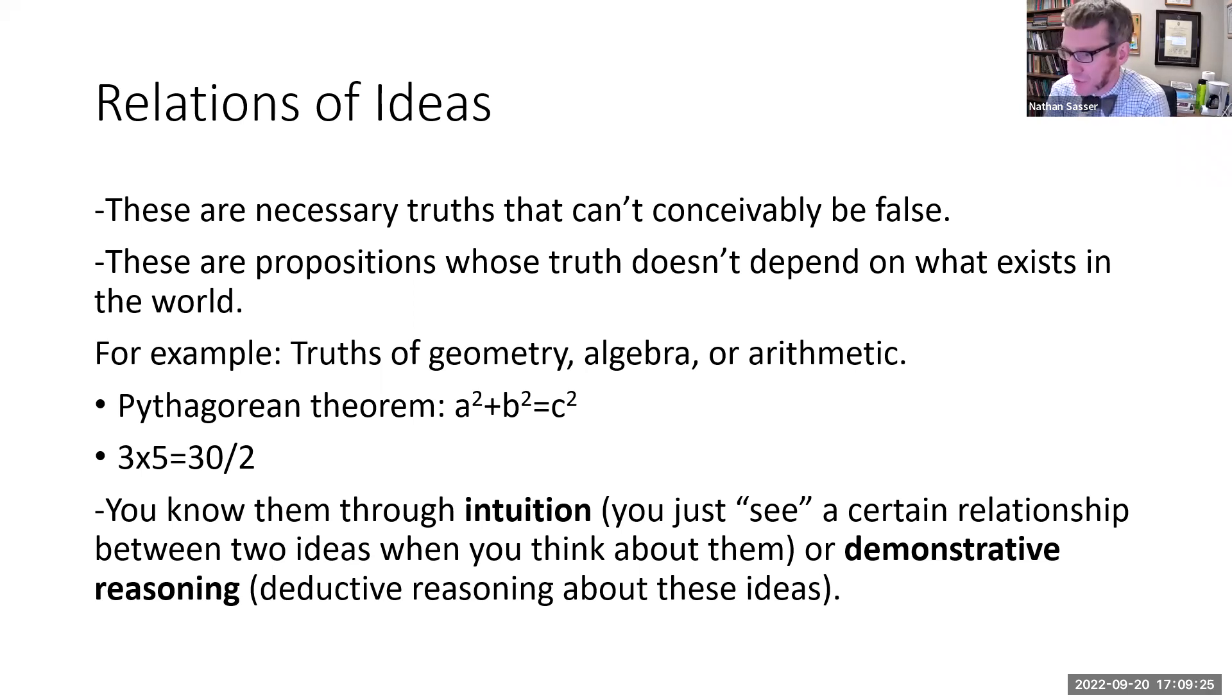Or a simpler mathematical truth like three times five is equal to 30 divided by two. That simply expresses the relationship between the ideas of these numbers. According to Hume, you know relations between ideas simply through intuition. That is, when you think about the two ideas, you just see a certain relationship that holds between them. Or you can also know relations of ideas through what he calls demonstrative reasoning. By that, he simply means what we would call deductive reasoning about our ideas. It essentially involves like a chain of intuitions about the constituent ideas.